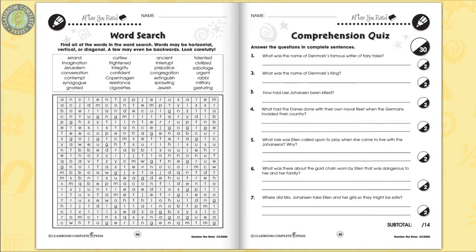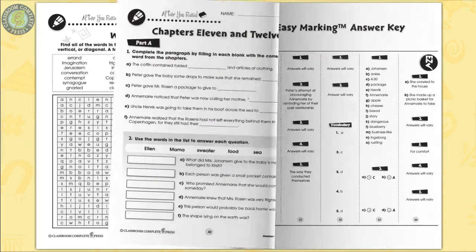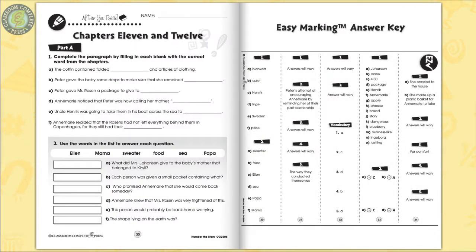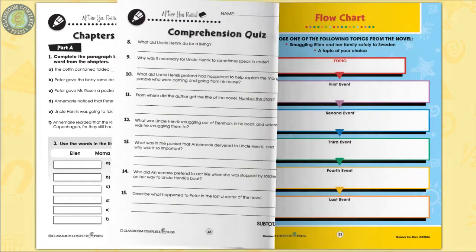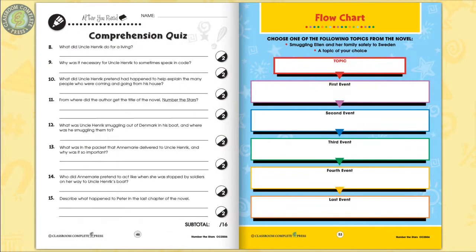A word search puzzle and comprehension quiz ends the unit. The Easy Marking Answer key works by lining up perfectly with the matching question pages. Three-color posters, which are graphic organizers, complete the resource.